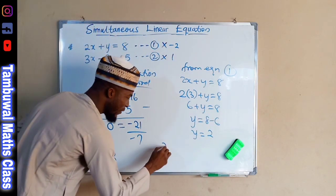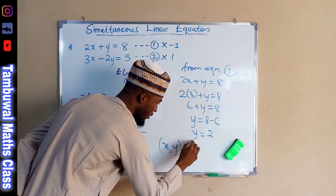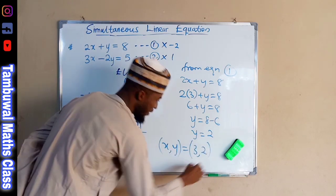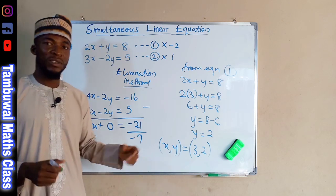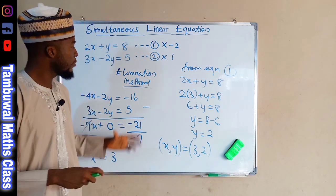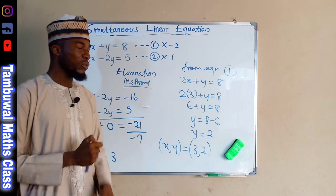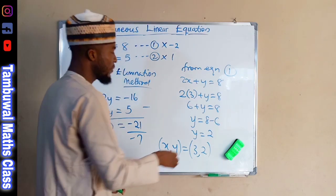Hence, we say the values of X and Y are 3 and 2, respectively. So, this is how to solve a system of simultaneous linear equations by elimination method. Now let us look at the method of substitution.